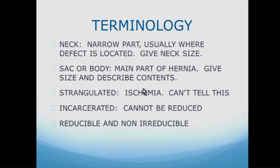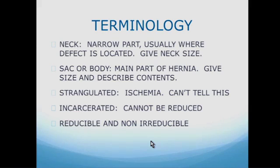Let's talk about terminology. The neck of a hernia is the narrow part where it penetrates through a fascial plane — where the defect is located. You need to tell your surgeon what the neck size is. The sac or body is the main part of the hernia — the peritoneal sac that contains bowel or fat. A strangulated hernia is one where ischemia is caused by a narrow neck; this is difficult to determine with ultrasound. An incarcerated hernia cannot be reduced — the fat or bowel are caught in the sac. You should tell the surgeon whether the hernia is reducible or non-reducible.